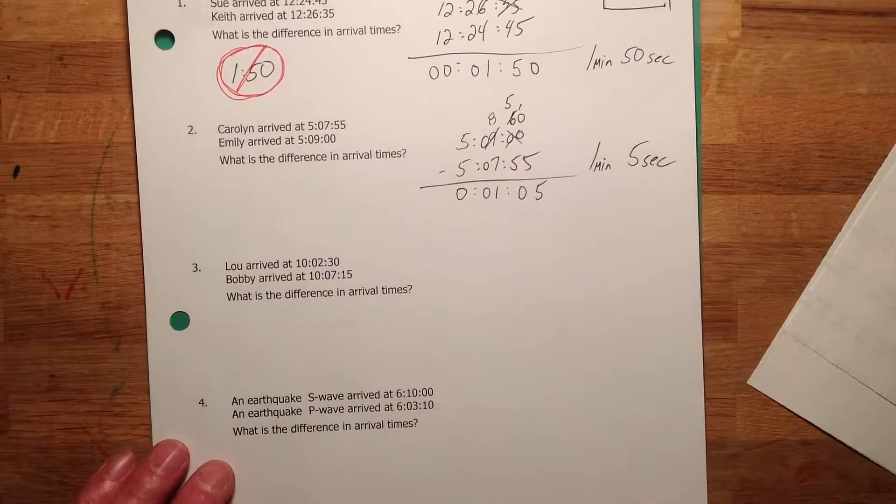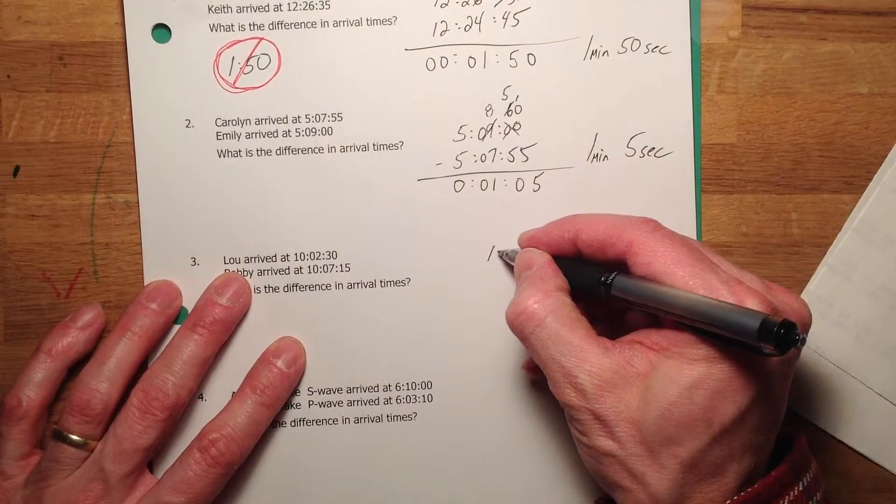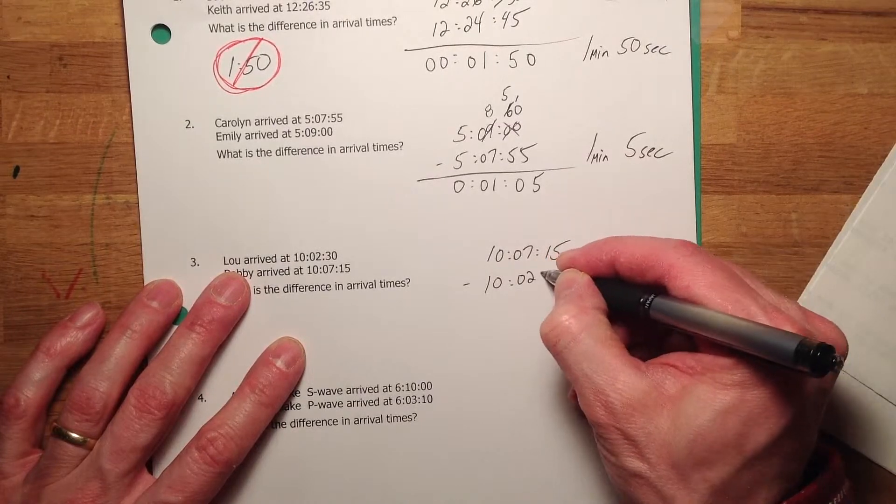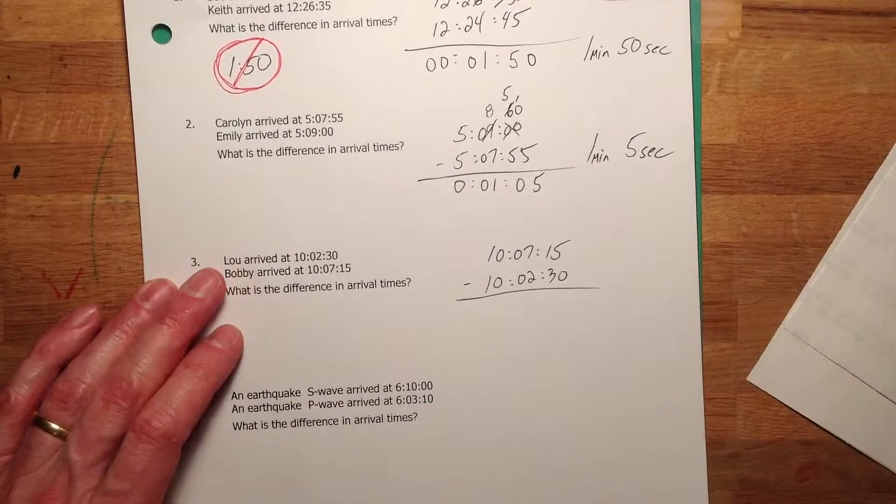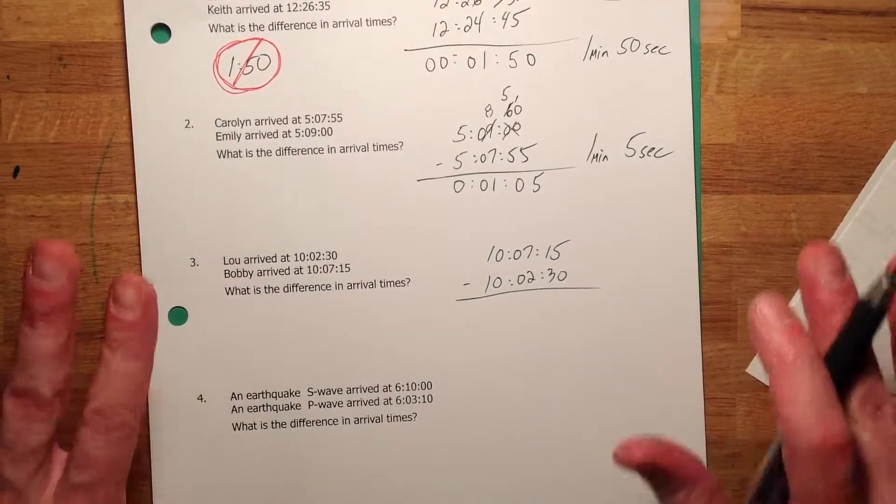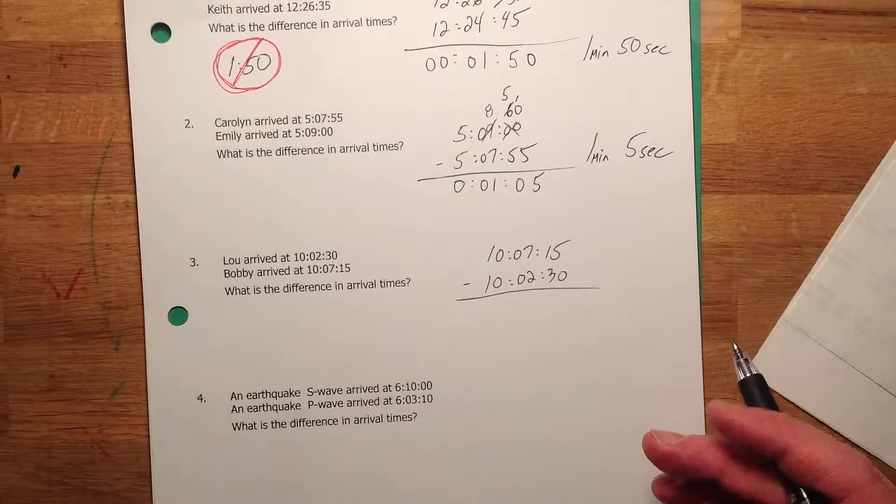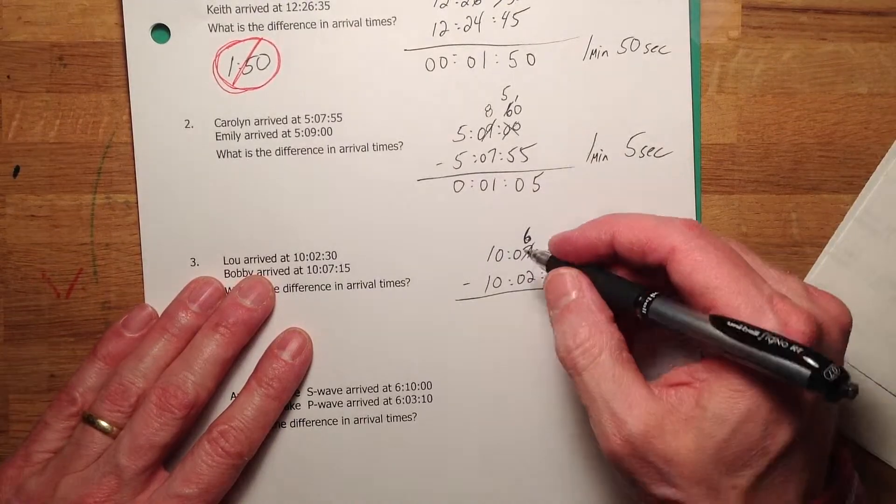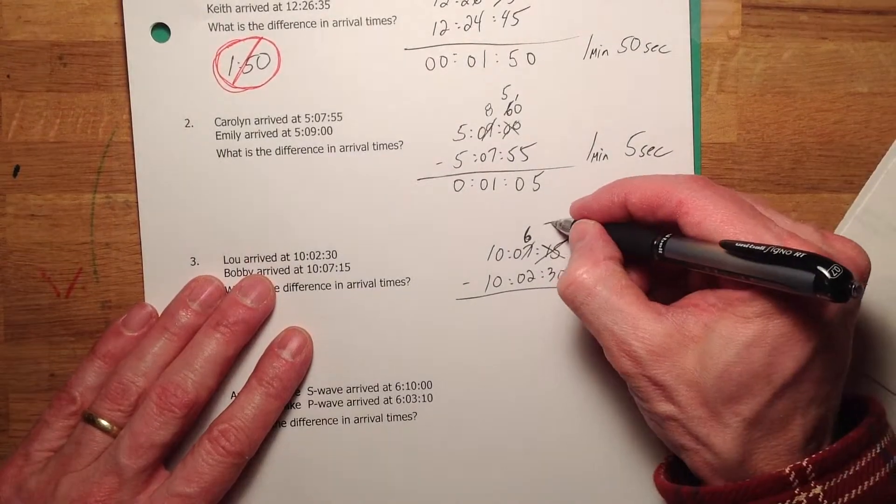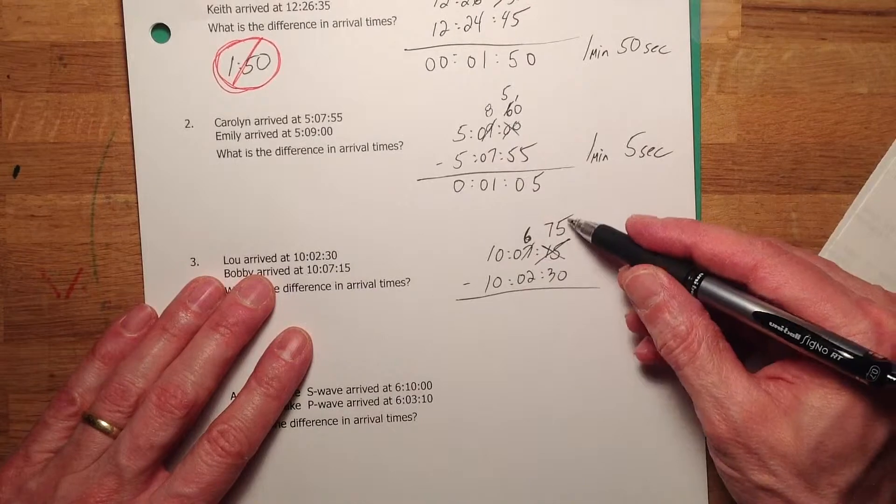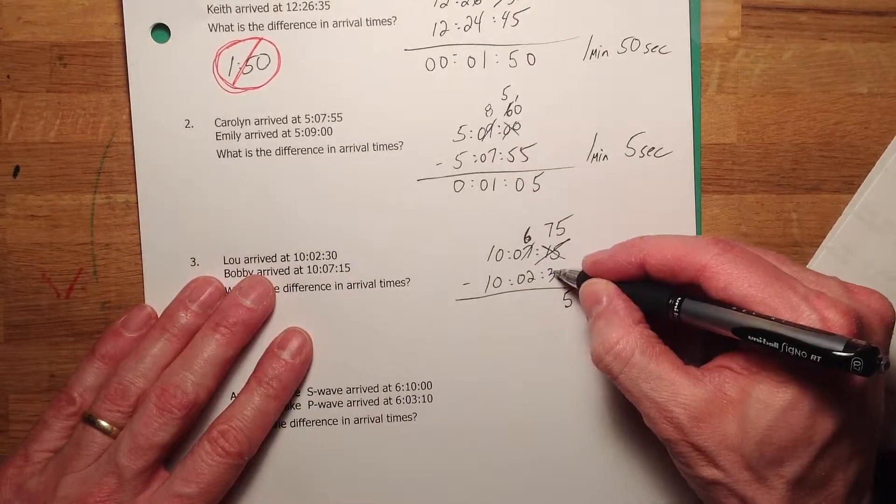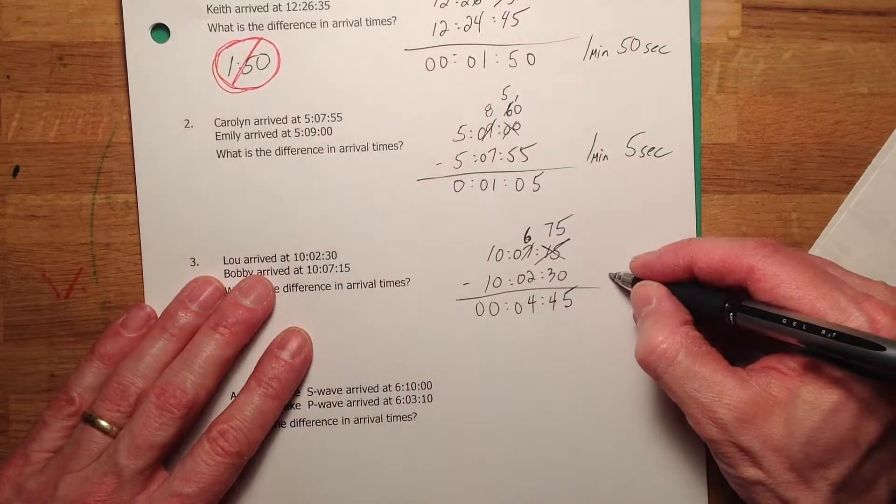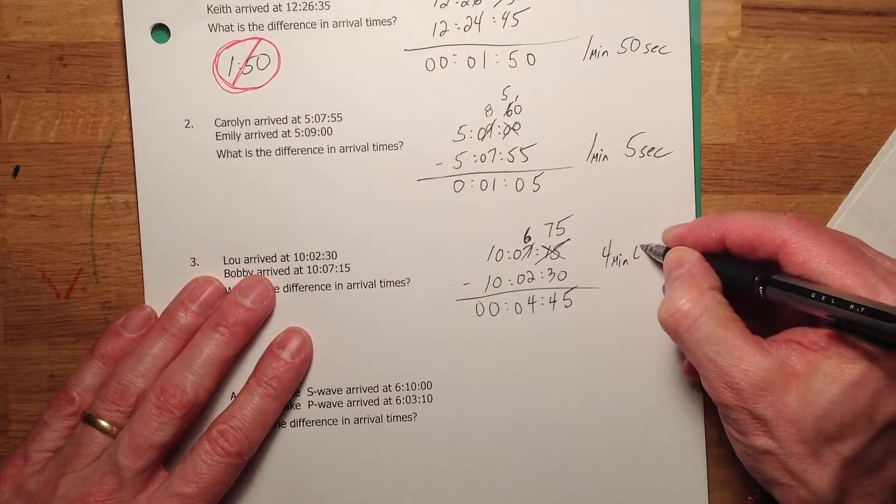Lou and Bobby. Bobby arrived later. So, I put that at the top. 10 hours, 7 minutes, 15 seconds. And I take away 10:02:30. I ask myself, can I take 30 away from 15? And I can't. Borrowing again. You don't always need to borrow. It just so happens the first few of these require borrowing. So, I then borrow here, 6. Don't forget. I am borrowing 1 minute. 7 minutes becomes 6 minutes. I'm borrowing 1 minute, which is 60 seconds. Cross this out. Add 60 to the 15. That will give you 75. And then you do 30 from 75. 7 minus 3 is 4. That's going to be 45 seconds. 6 minus 2 is 4. 0 and 0. And you can write that. Or you should write it like this. 4 minutes, 45 seconds.